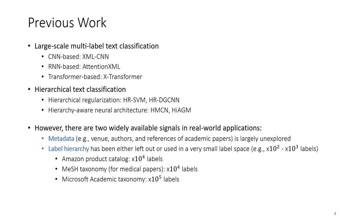However, in real-world applications, there are two widely available signals. The first one is metadata. Most of the work only considers plain text of a document. However, documents on the web are usually accompanied by metadata signals. For example, for academic papers, there are venues, authors, and references. However, these signals are largely unexplored.